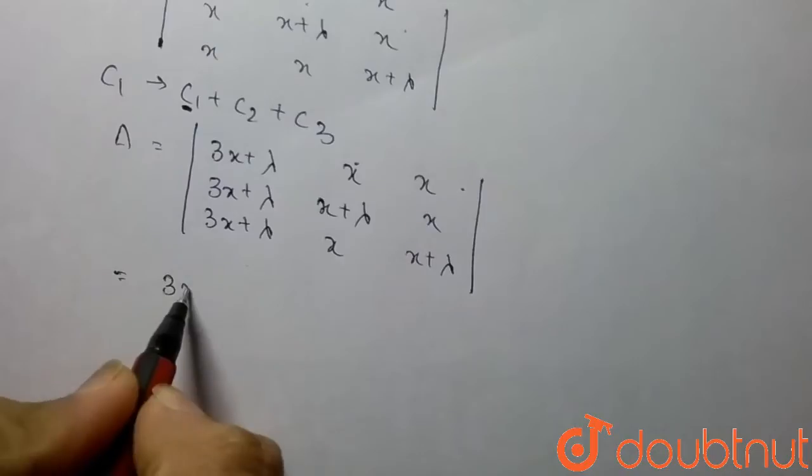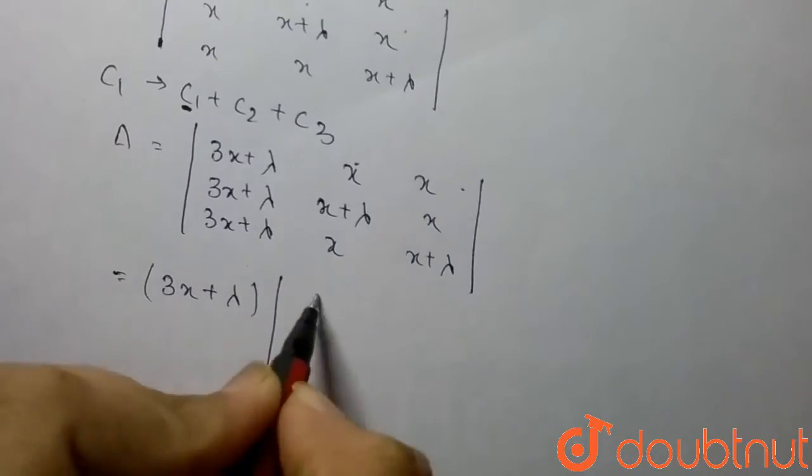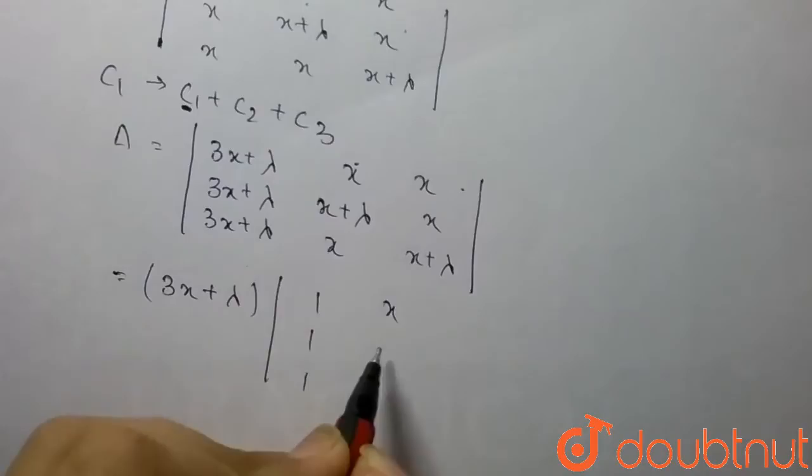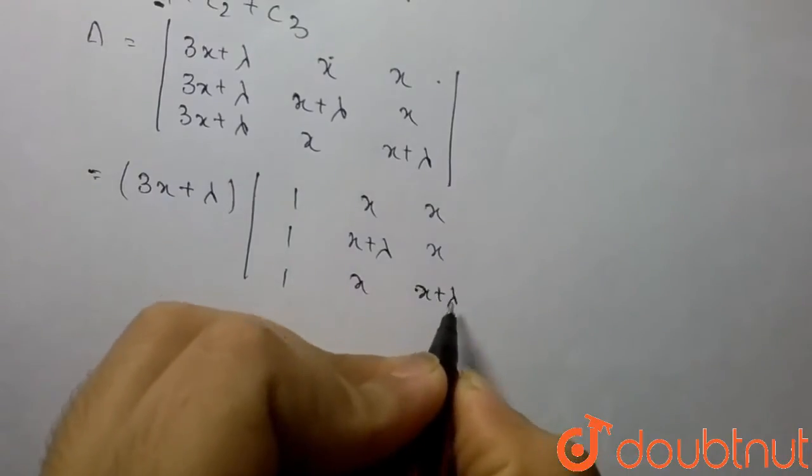So we get 3x+λ times a determinant with first column entries (1, 1, 1), and the remaining entries are x, x+λ, x in the second row and x, x, x+λ in the third row.